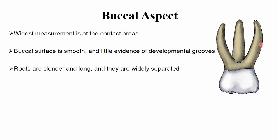There are three roots: the mesial root, the distal root, and the lingual root — sometimes also referred to as the palatal root. The roots are cylindrical, long, and widely separated. Among these three roots, the distal root is shorter than the mesial root.